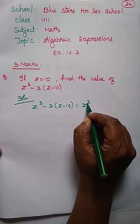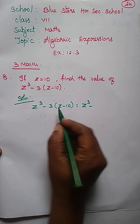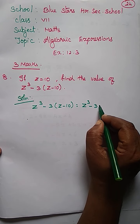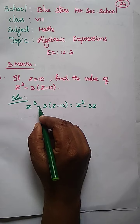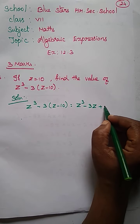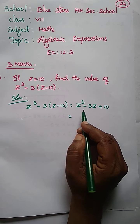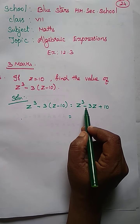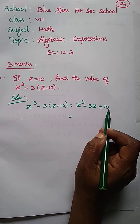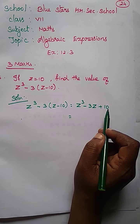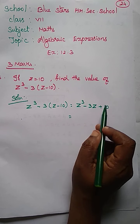Z cube minus 3 into Z is 3Z, minus into minus plus, 3 tens of 30. So now Z cube minus 3Z plus 10. This is the expression we are having.